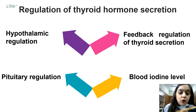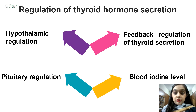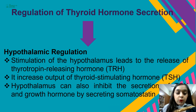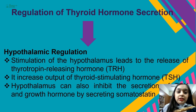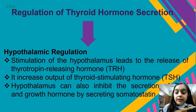The regulation of thyroid hormone secretion is governed by the hypothalamus-pituitary feedback mechanism and blood iodine levels. Stimulation of the hypothalamus leads to the release of thyrotropin-releasing hormone (TRH), which is secreted by the nerve endings in the median eminence of the hypothalamus. TRH increases the output of TSH. The hypothalamus can also inhibit the secretion of TRH and TSH by secreting somatostatin.